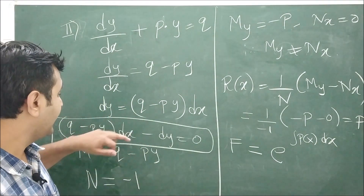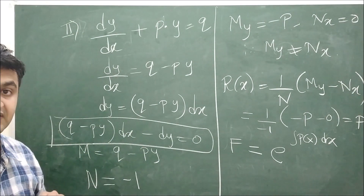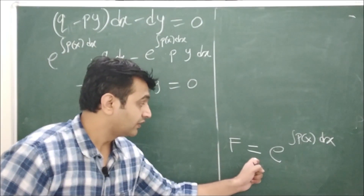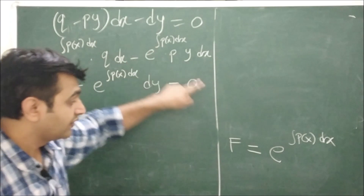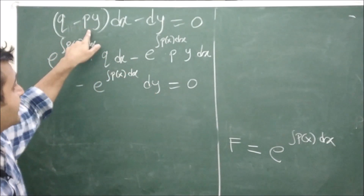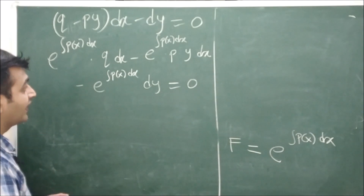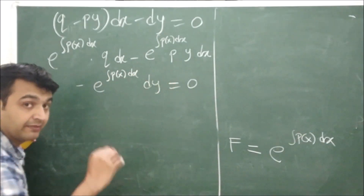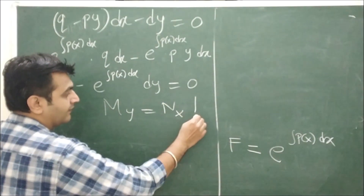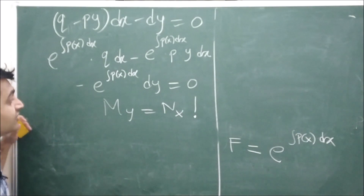Once we have the integrating factor, we multiply the non-exact differential equation by F so that it becomes exact. Multiplying F = e^(integral of P) through the equation gives: e^(integral P)·Q dx − e^(integral P)·P·y dx − e^(integral P) dy = 0. You can verify that M_y = N_x, confirming exactness.